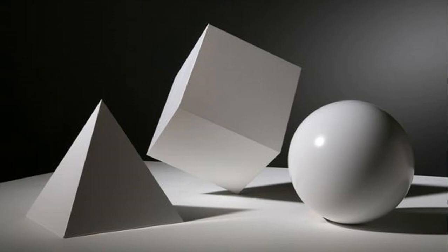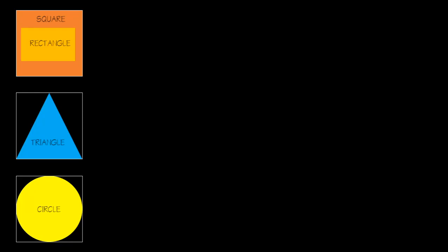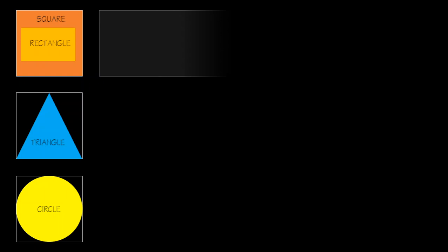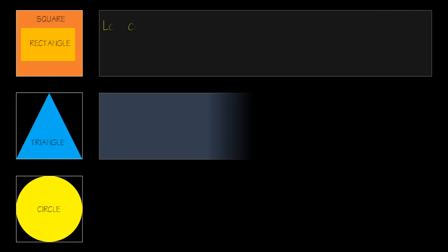When we talk of basic shapes, we are talking of the primary basic shapes: the square, the circle, the triangle. How do these primary shapes affect architecture?